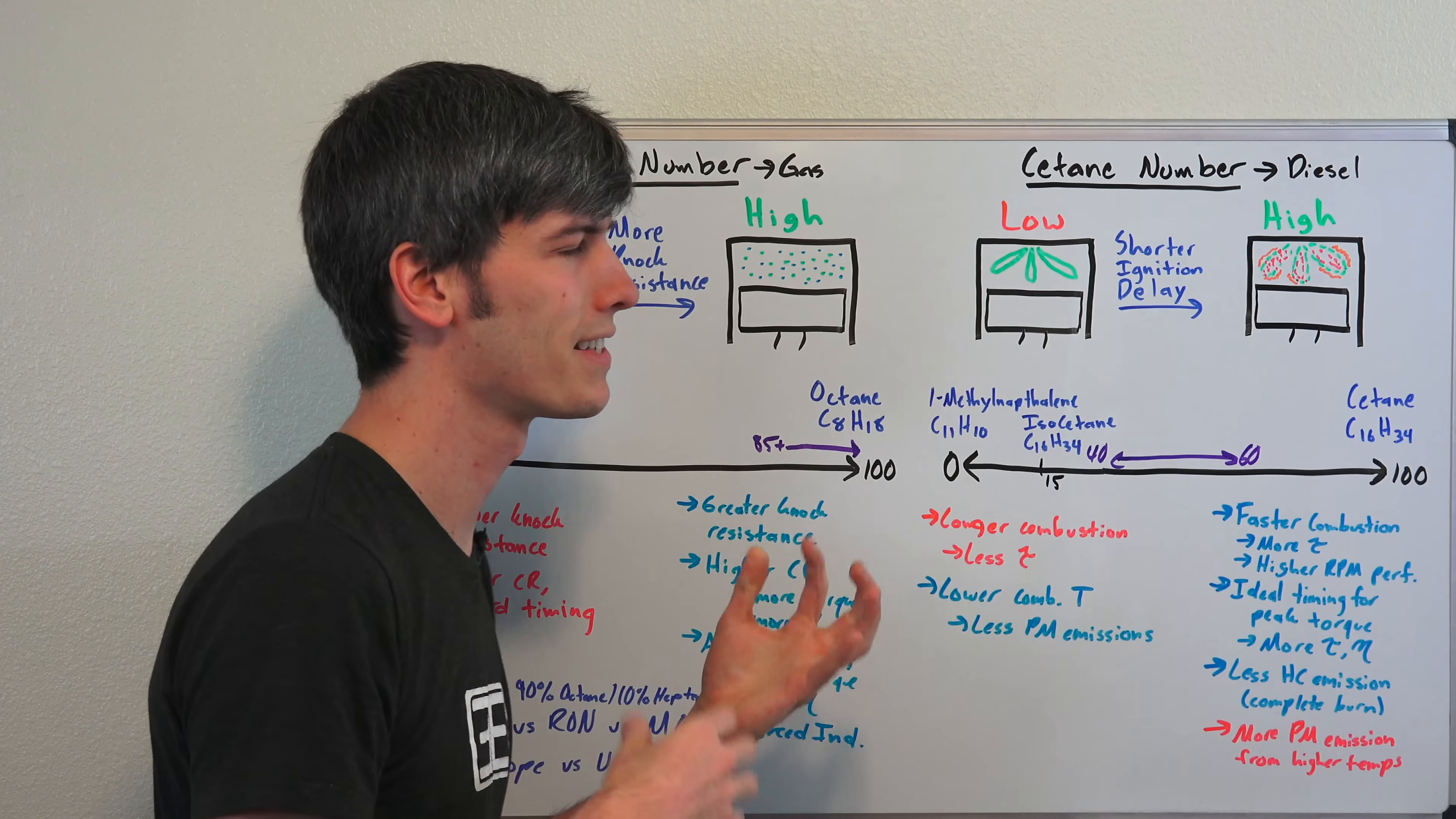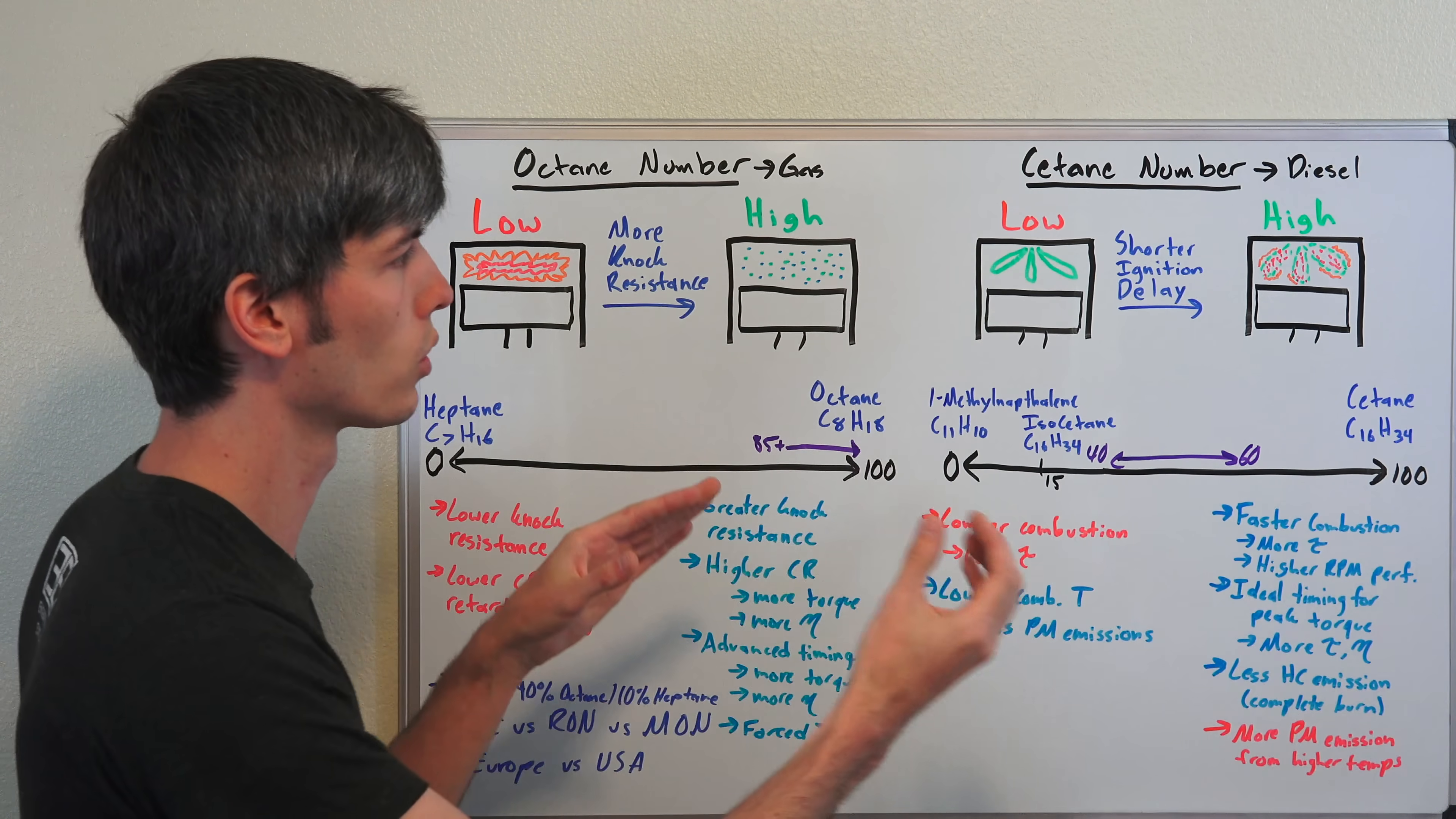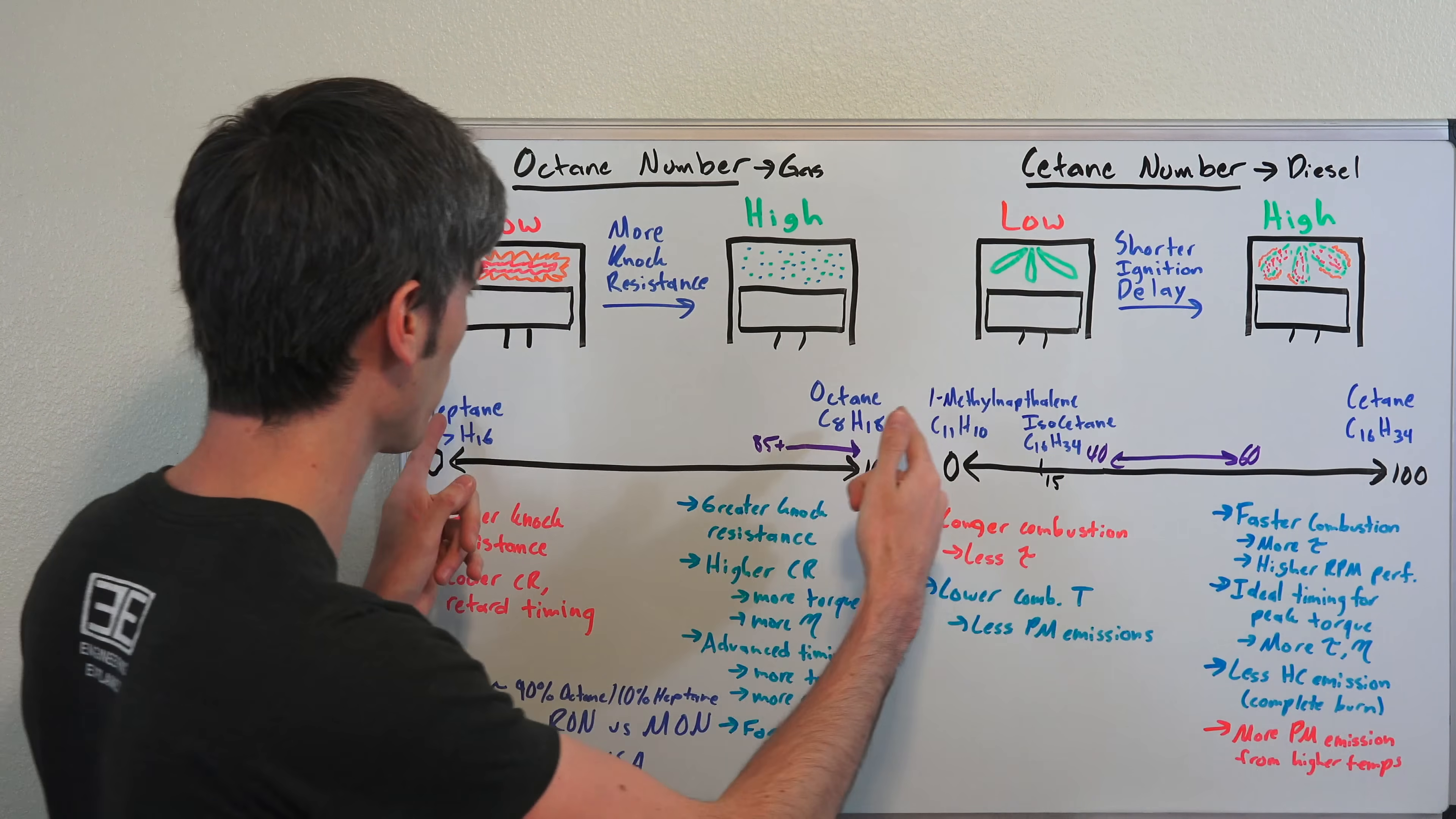Now let's talk about the cetane number. The cetane number is a measure of a diesel fuel's ignition delay. It's a measurement of the time from when fuel is first injected into the cylinder to when that fuel first starts to combust. A high cetane number means that fuel ignites very quickly after it's injected. A low cetane number means it takes a while for that fuel to start igniting.